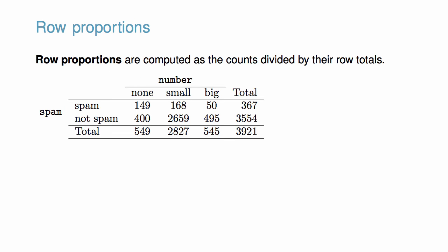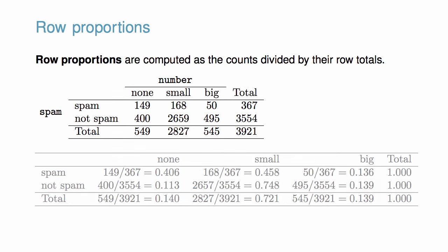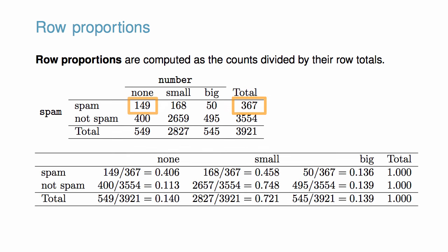Before moving on, it's interesting to note that we can continue one step further with summarization via contingency tables. One way is by calculating row and column proportions. Row proportions are computed as the cell counts divided by their row totals. In calculating row proportions, the right-hand margin will always be 1, and the cell values will be the proportion of the row that belongs to each individual level. For example, 40.6% of spam emails contained no numbers, while only 11.3% of non-spam emails contained no numbers.